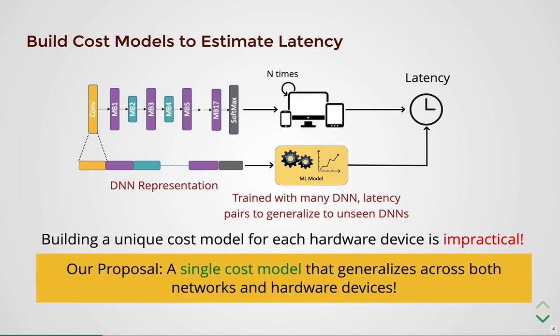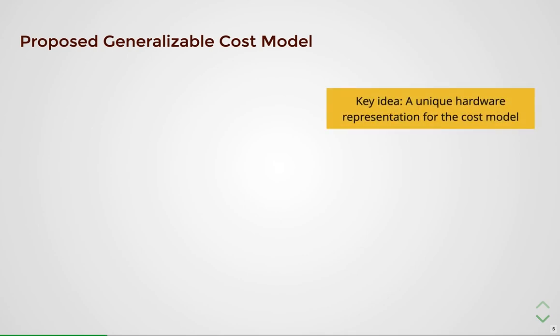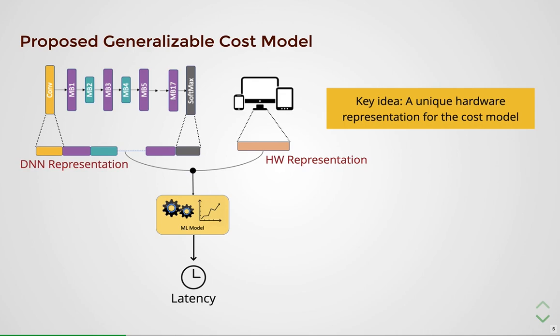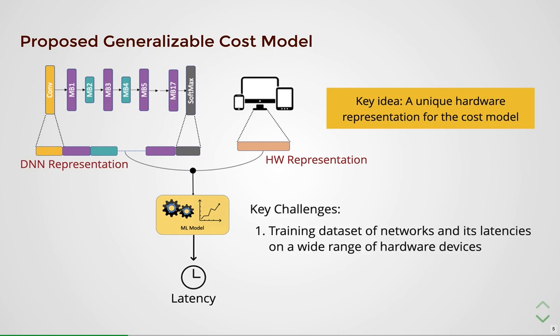In this work, we make a case for building a single cost model that can reliably estimate the latencies of many unseen DNNs on many unseen mobile devices. The key idea is to have a unique hardware representation given as an additional input to the cost model. In this paper, we answer conclusively how to represent a device platform by proposing an elegant representation. With sufficient training data and a good input representation, the cost model will learn to reliably predict latencies — generalizing across both the axis of networks and devices.